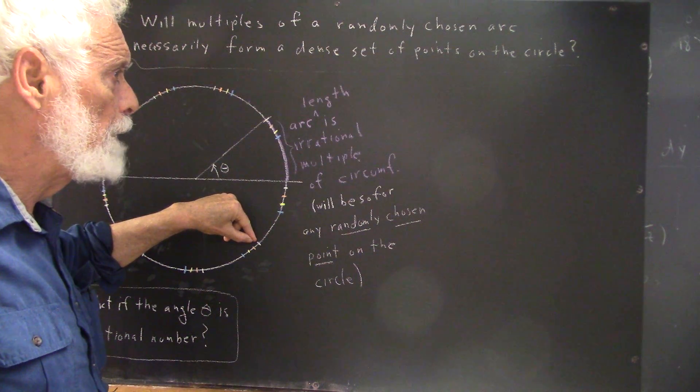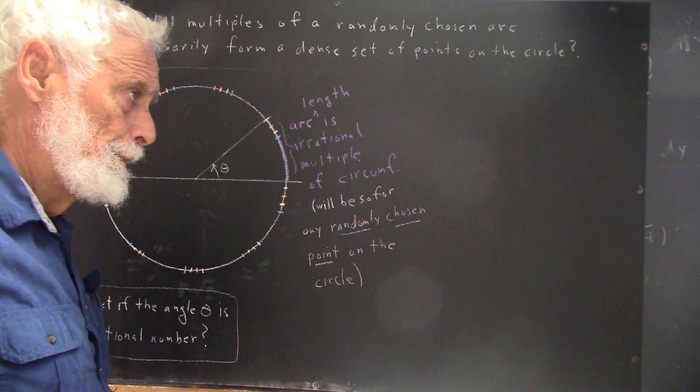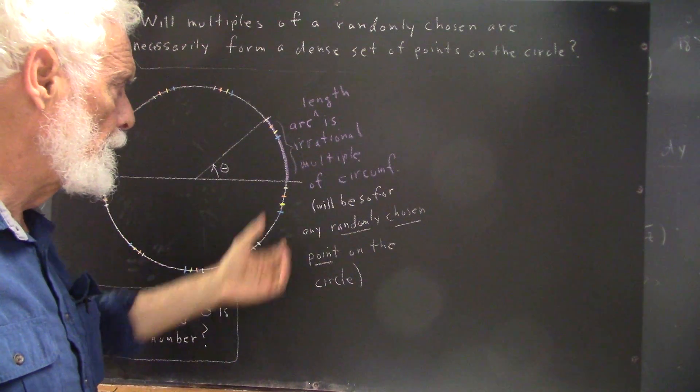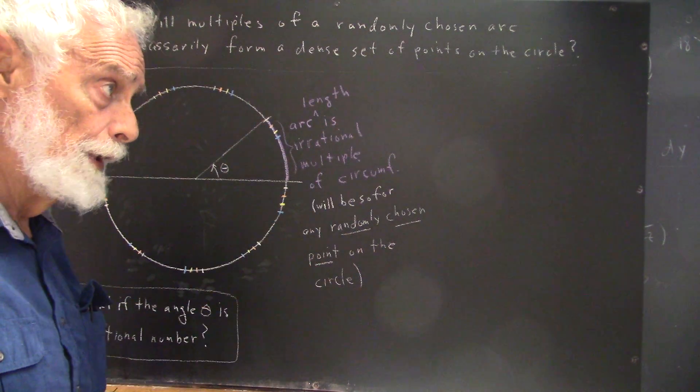But if we have infinite precision, it turns out that it's not. And you can prove this using the properties of rational and irrational numbers.